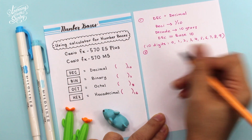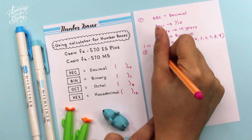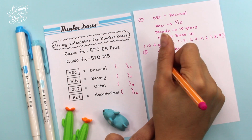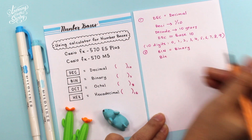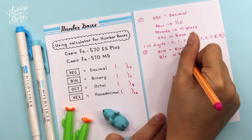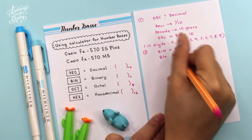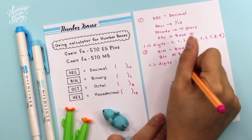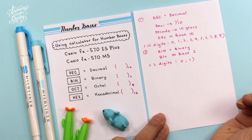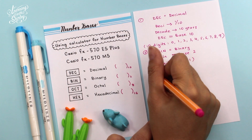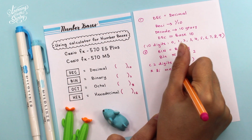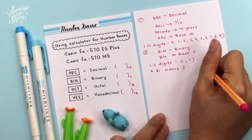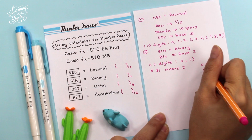Number 2 is BIN. BIN stands for binary, which means base 2. In base 2, we use only 2 digits, and the 2 digits are 0 and 1. Remember that 'bi' means 2. Binary is normally used for computer programming — for example, 0 means off and 1 means on.